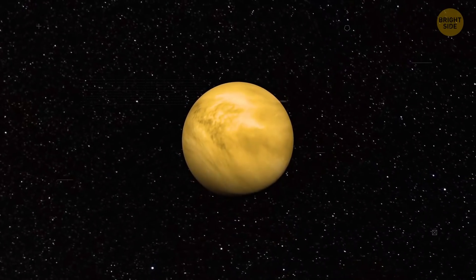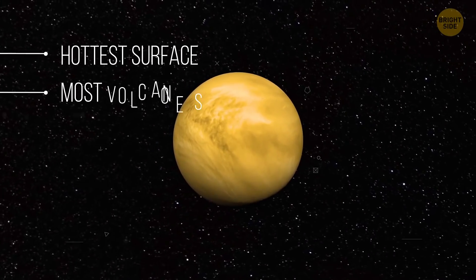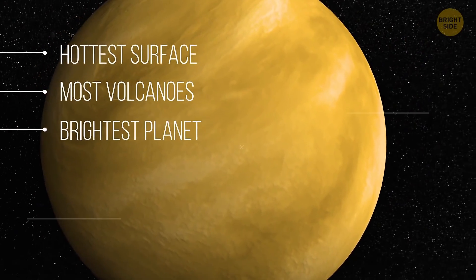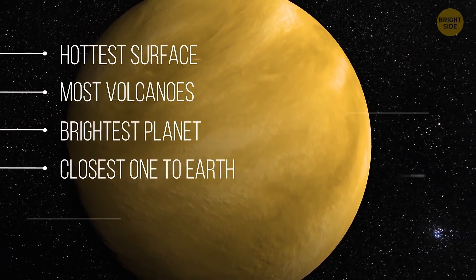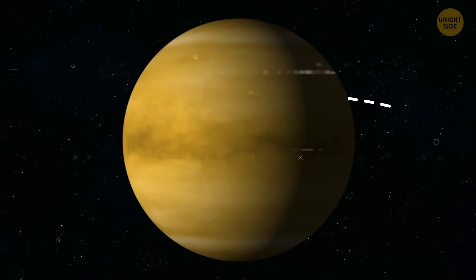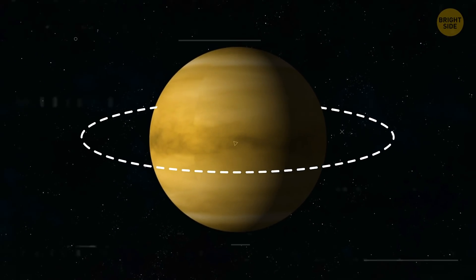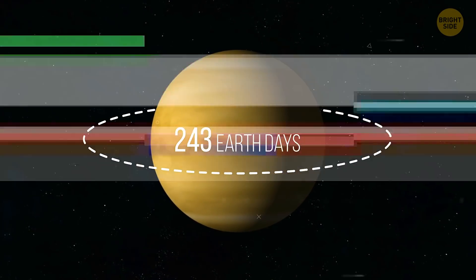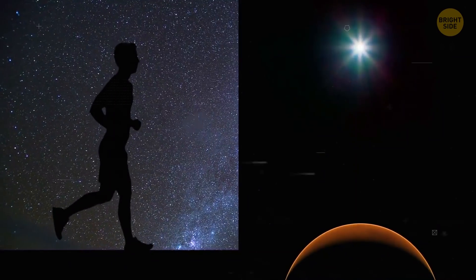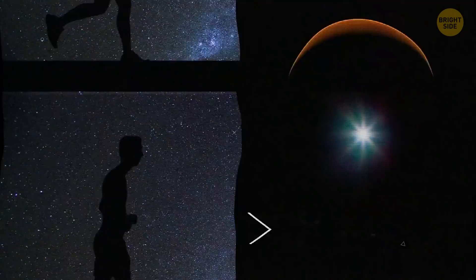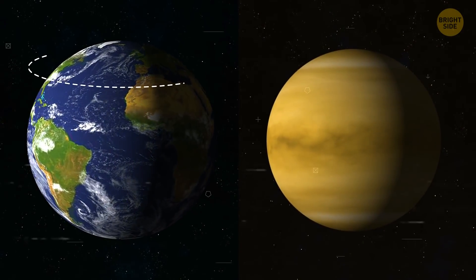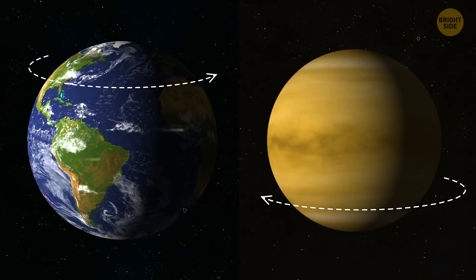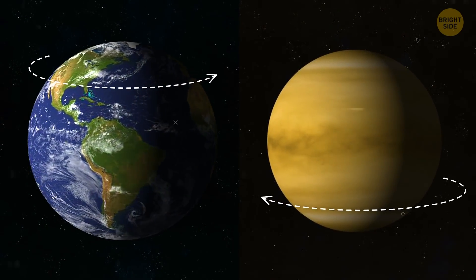Venus is a planet of extremes. The hottest surface, the most volcanoes, the brightest planet, and the closest one to Earth. It's also the slowest spinning and barely rotates, making a day on Venus last 243 Earth days. You could literally walk faster before the planet makes a complete turn. Venus also rotates in the opposite direction that Earth does. So, sunrises are in the west, and the Sun sets in the east.